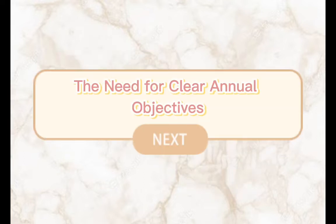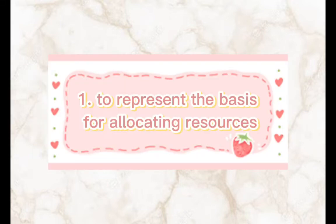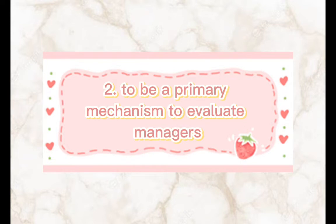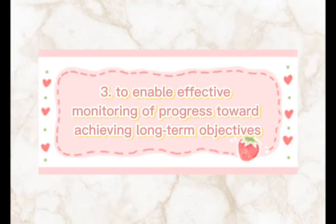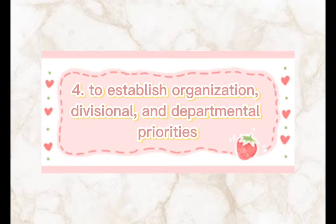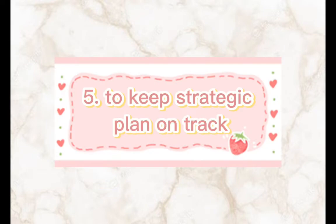The need for clear annual objectives. One: to represent the basis for allocating resources. Two: to be a primary mechanism to evaluate managers. Three: to enable effective monitoring of progress toward achieving long-term objectives. Four: to establish organization, divisional, and departmental priorities. Five: to keep the strategic plan on track.